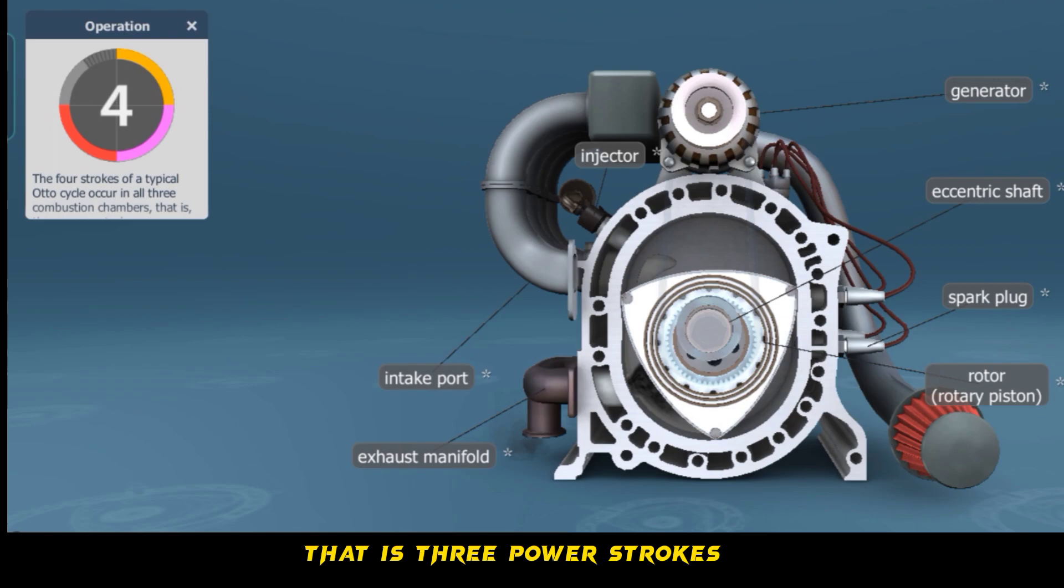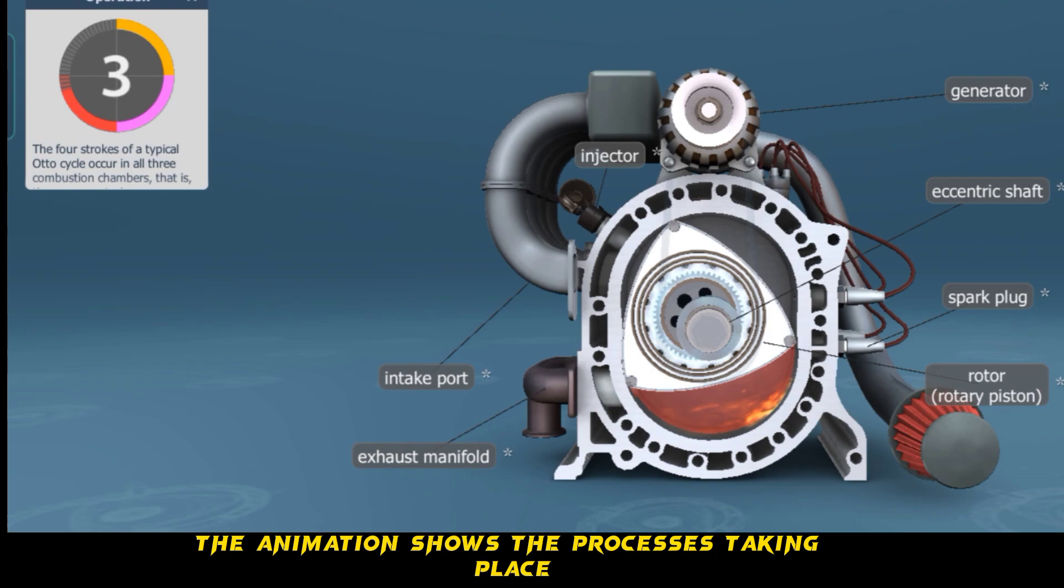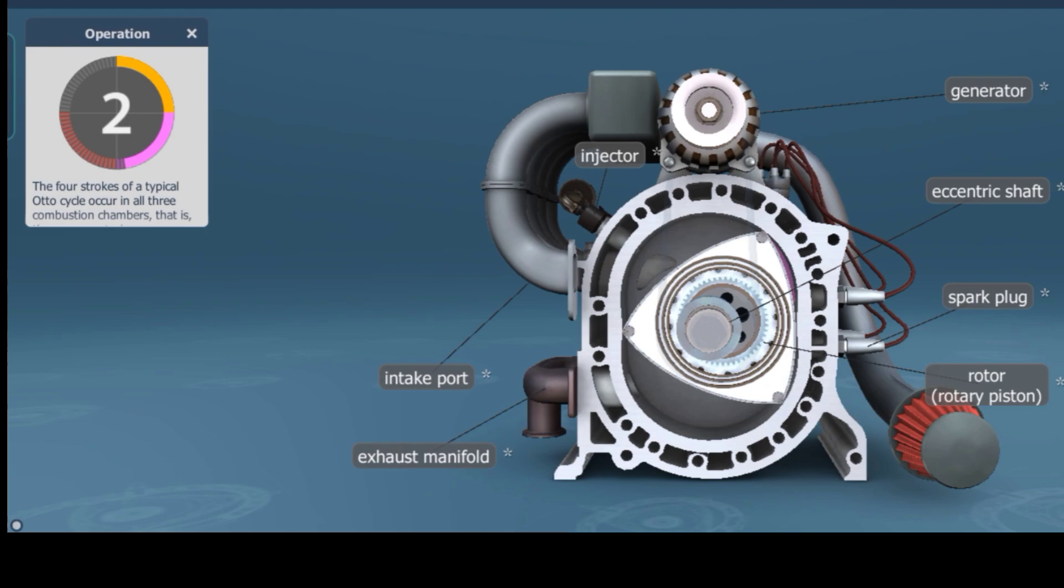That is, three power strokes occur during each full turn of the crankshaft. The animation shows the processes taking place in one of the three combustion chambers.